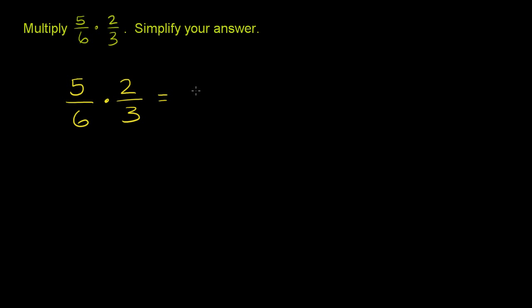The new numerator, the numerator of the product, is just the product of the two numerators, or your new top number is the product of the other two top numbers. So the numerator in our product is just 5 times 2. So it's equal to 5 times 2 over 6 times 3, which is equal to 5 times 2 is 10, and 6 times 3 is 18.